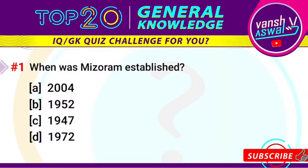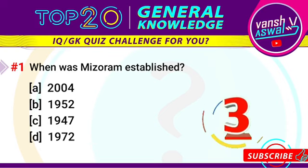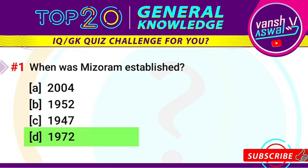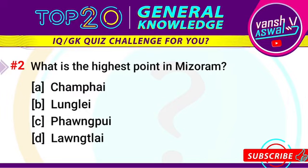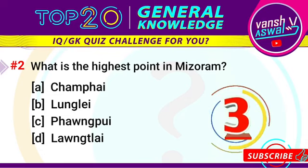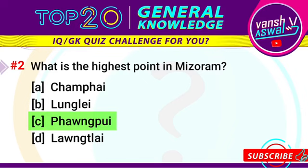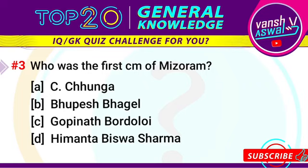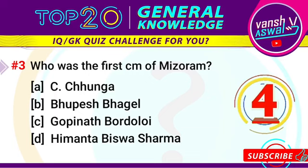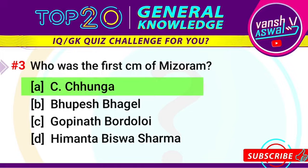Our first question is: when was Mizoram established? The right answer is 1972. Our second question is: which is the highest point in Mizoram? The correct answer is Phong Pui. Our third question is: who was the first Chief Minister of Mizoram? The right answer is Ch. Chhunga.